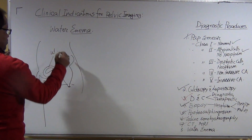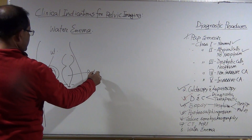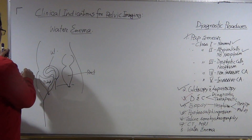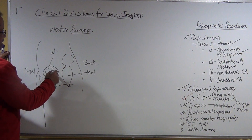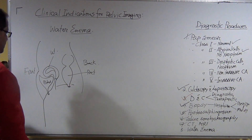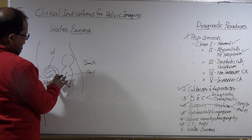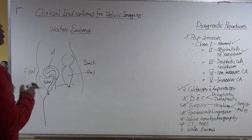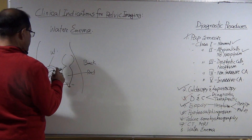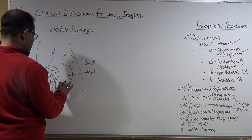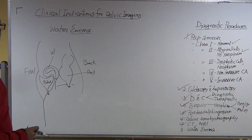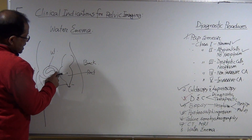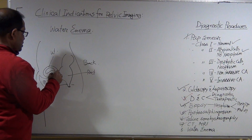Let me give you the anatomy first. You have the bladder, uterus, and the rectum. Look here — the uterus and the rectum are so close. And if there is a fibroid that is growing bigger...